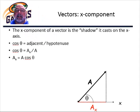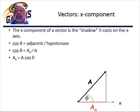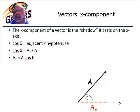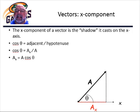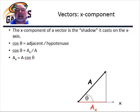First off, the x component of the vector — the mathematical name for it is the projection of the vector on the x-axis. I like to think of it as the shadow of the vector on the x-axis. If you can visualize this, a really large flashlight hanging way above the vector, pointing down towards the x-axis — the shadow that the vector would cast on the x-axis is the component.